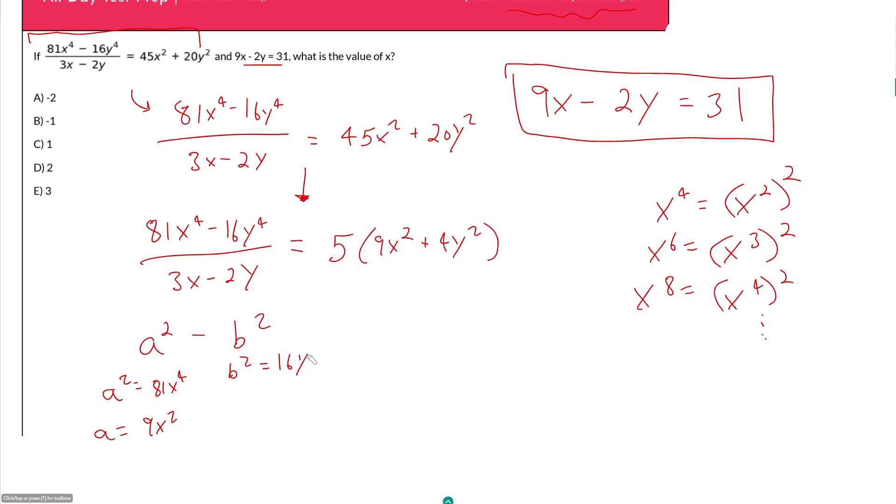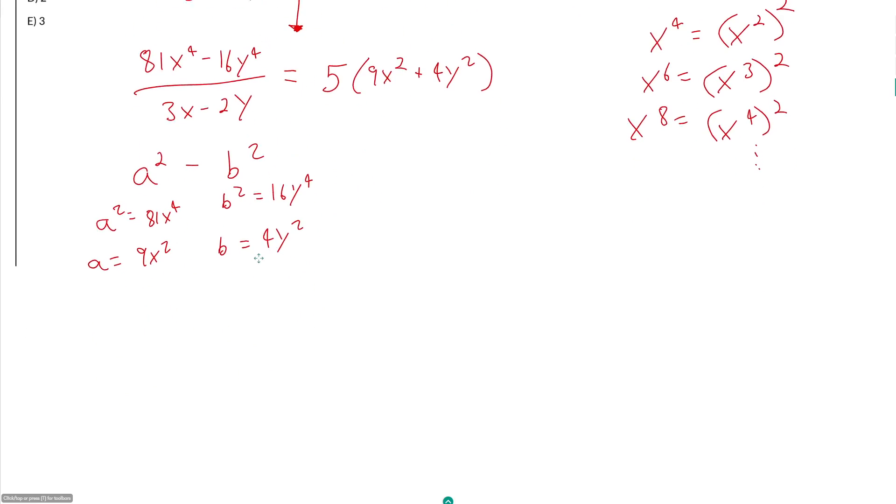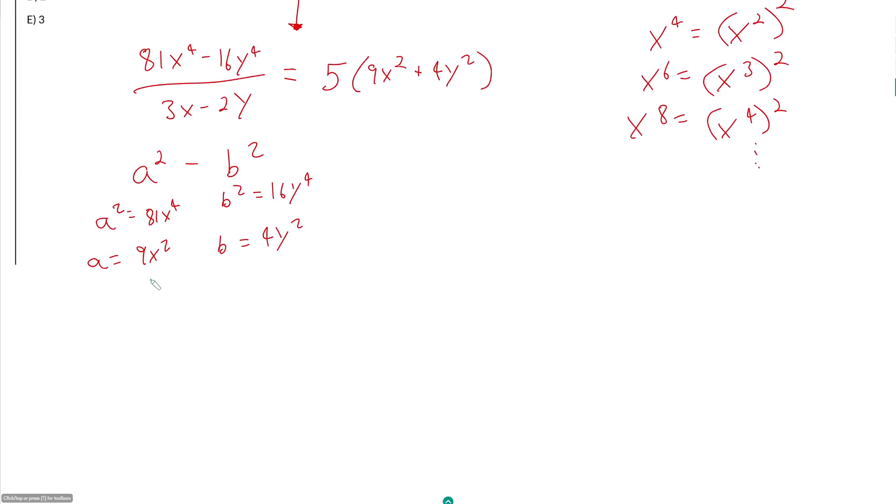Our b squared is 16y to the 4th. Therefore, our b is the square root of this, which is just 4y squared. So if we wanted to rewrite this in its factored form, we would have 9x squared plus 4y squared times 9x squared minus 4y squared, all over 3x minus 2y. This is equal to 5 times 9x squared plus 4y squared. This has me happy because I can divide each side by 9x squared plus 4y squared. Those guys cancel out.